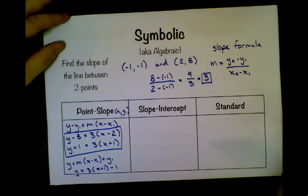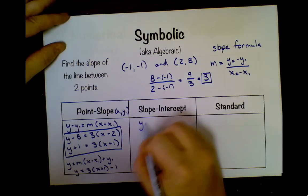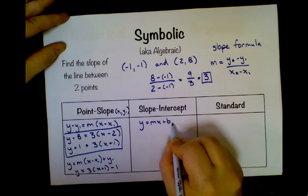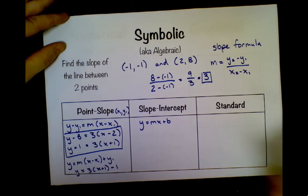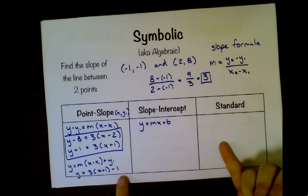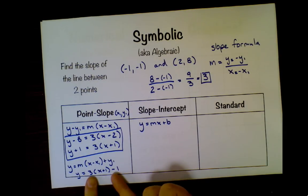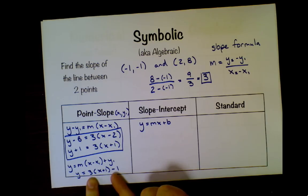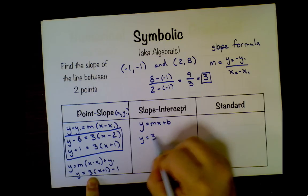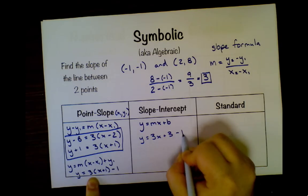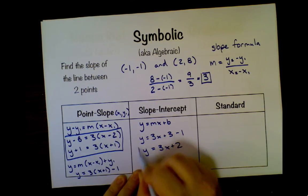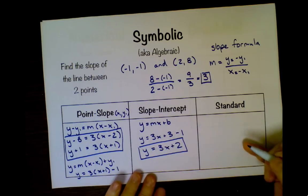We're going to move on and look at slope-intercept form. Slope-intercept form goes y equals mx plus b. m is the slope, b is the y-intercept. All we have to do... I actually kind of already did half of it getting to function form. You isolate your y and you distribute. I'm going to distribute 3 times x plus 3 times 1 minus 1. So y equals 3x plus 2.